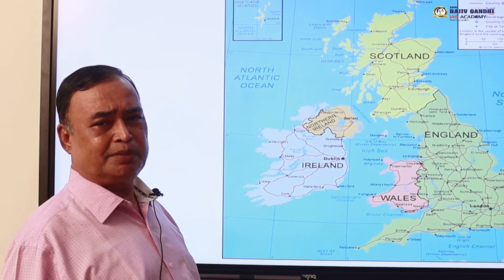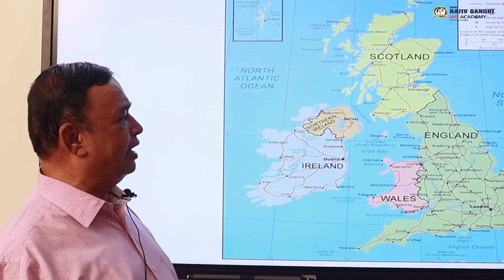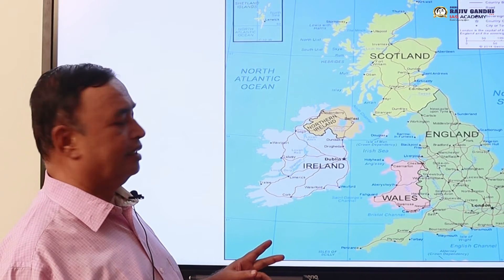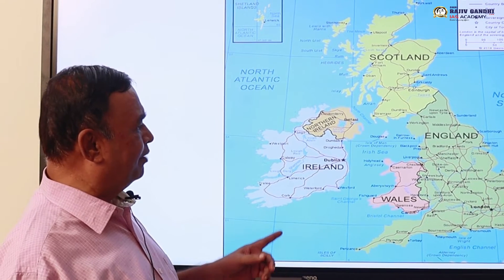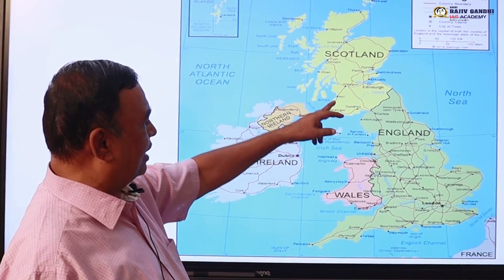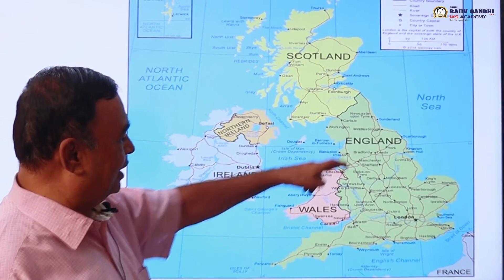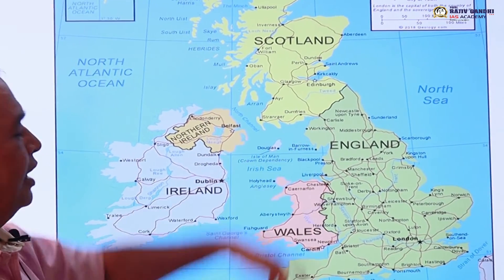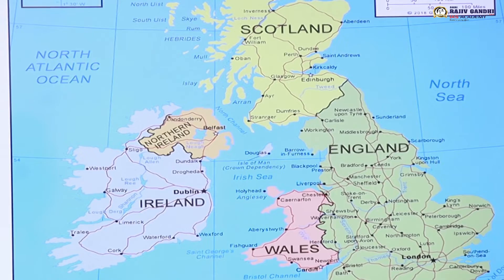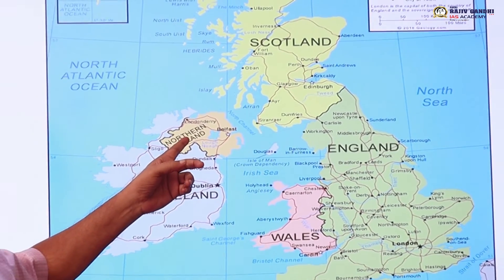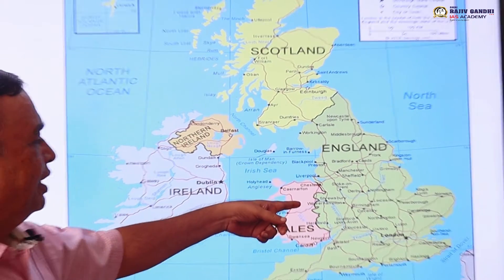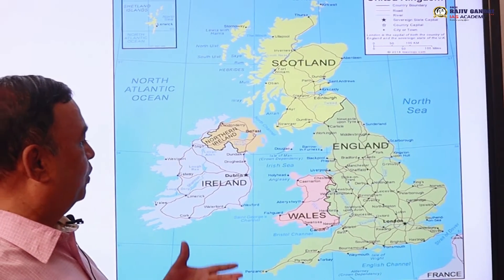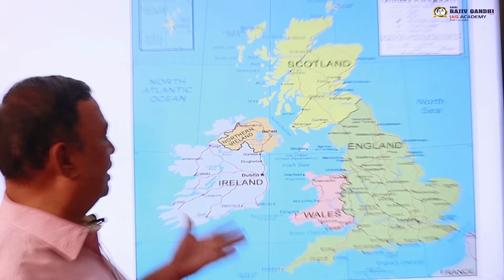From the UPSC point of view, we expect that a question may be asked from the map of Great Britain. Please look at the map. This is Scotland, this is England, and this is Wales. All three together are called Great Britain. And if you include Northern Ireland with Great Britain, it is called the United Kingdom. That is the difference between United Kingdom and Great Britain.